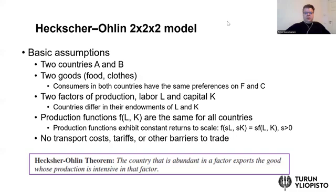The Leontiev paradox relates to the Heckscher-Ohlin model of international trade that we have considered in the previous video lessons. It is quite obvious that the assumptions of the model are somewhat simplistic and unrealistic in the real world. However, the goodness of economic models is not just based on how realistic assumptions it is making, but rather does it make some useful predictions about the real world. The main implication of this Heckscher-Ohlin model is the Heckscher-Ohlin theorem, which suggests that the country that is abundant in a factor exports the good whose production is intensive in that factor.